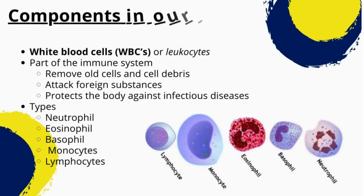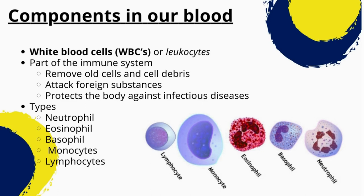White blood cells, also known as leukocytes, are part of the immune system and play a critical role in defending against disease and infection. They are produced in the bone marrow and circulate in the bloodstream. The main types of white blood cells in the human body are neutrophils, eosinophils, basophils, monocytes, and lymphocytes.